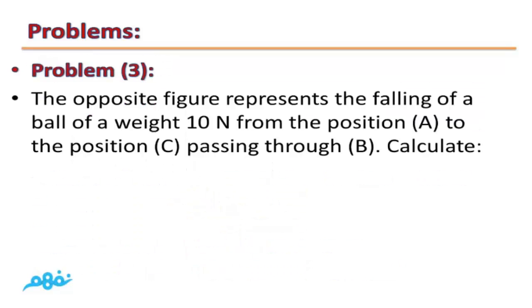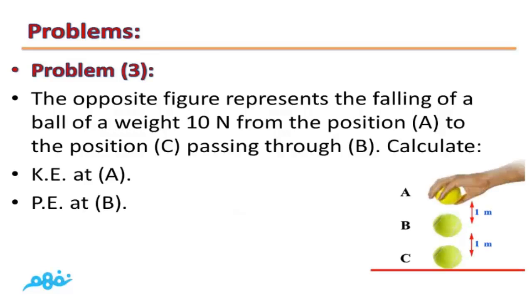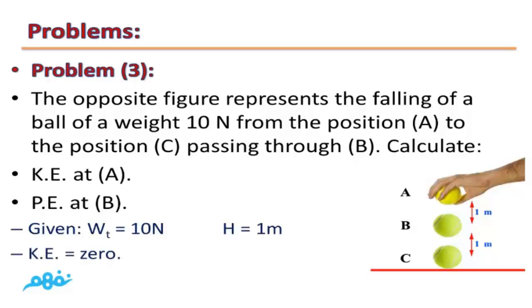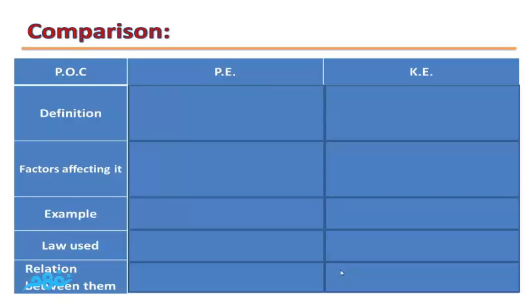Problem number 3: the figure presents the falling of a ball of weight 10 newtons from position A to position C, passing through B. Calculate kinetic energy at A and potential energy at B. Given: weight equals 10 newtons, height equals 1 meter, kinetic energy at A equals 0. Potential energy at B equals weight times height equals 10 times 1 equals 10 joules.